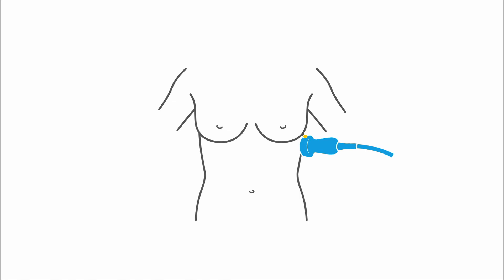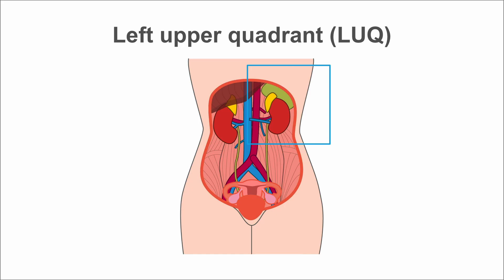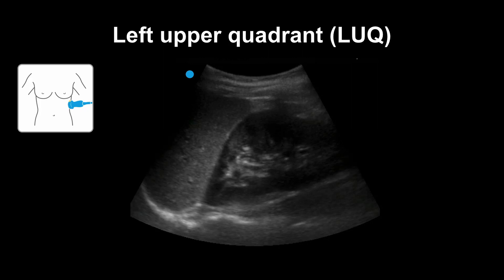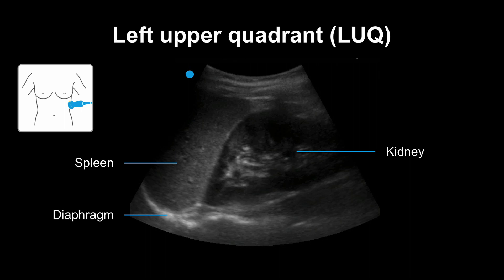Here is where you would typically apply the probe to get a view of the left upper quadrant. It is a little more posterior and a little bit superior compared to the placement for the right upper quadrant, because the spleen is smaller than the liver and tucked up more into the rib cage. This is a reminder of what the normal left upper quadrant looks like with the relationship of the spleen and kidney. Here is what a normal left upper quadrant appears like on ultrasound — you can see the spleen, kidney, and diaphragm. Because the spleen is smaller, fluid can surround the entire spleen.